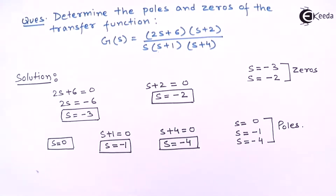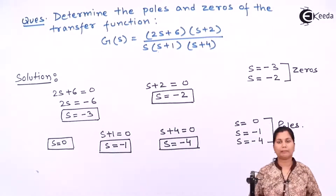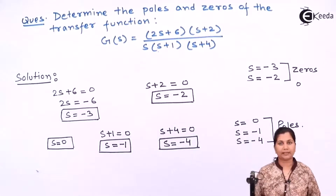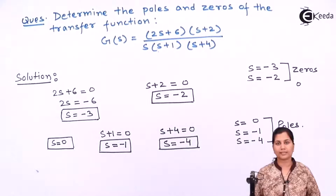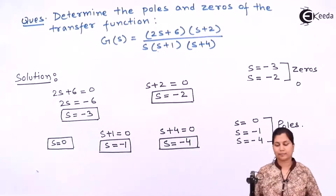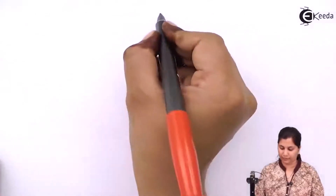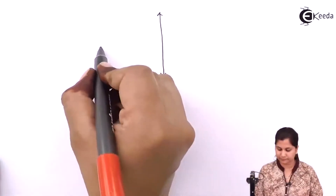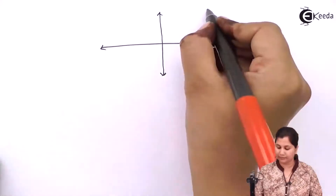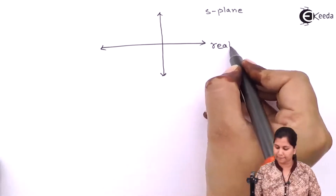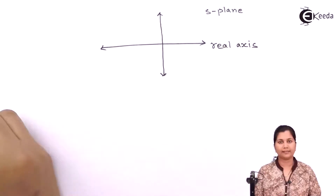Now, if it is asked that you have to represent these poles and zeros on the s-plane, the zeros are represented by a circle on the s-plane and the poles are represented by a cross sign in the s-plane. So let's represent the poles and zeros of the system in the s-plane.